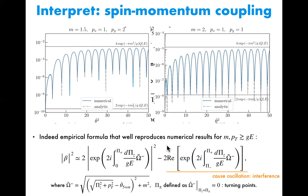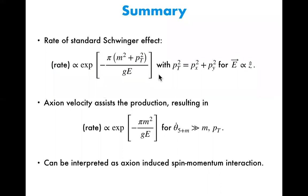So let me summarize my talk. The rate of the standard Schwinger effect is suppressed both by the fermion mass and also the transverse momentum P_T. But once you include the axion and the axion velocity assists the production, the suppression factor from P_T can be gone. This kind of effect can be interpreted as a result of the axion-induced spin-momentum interaction. Thank you.